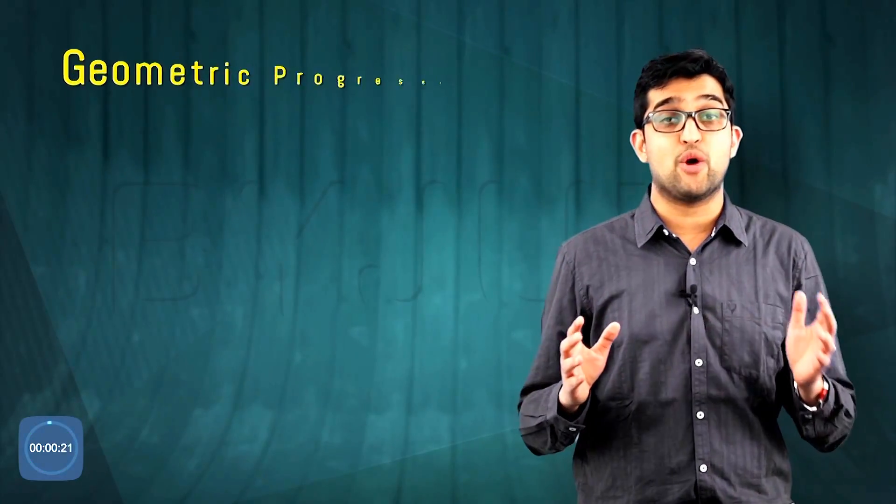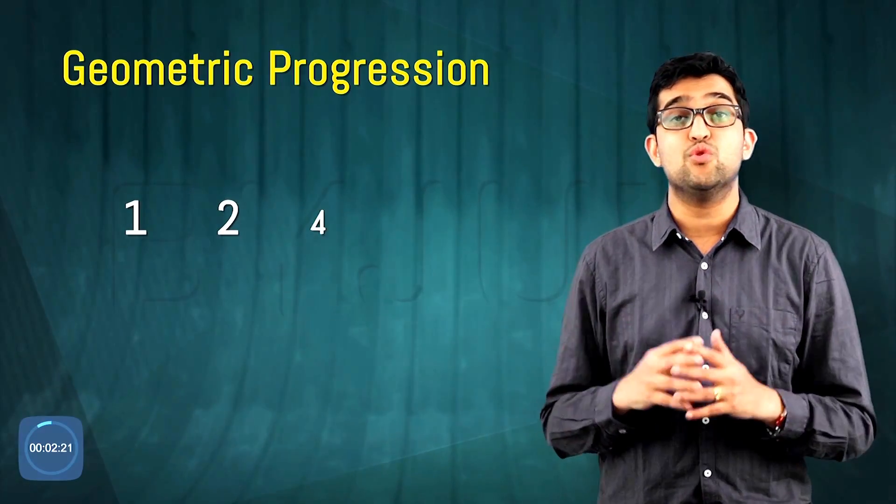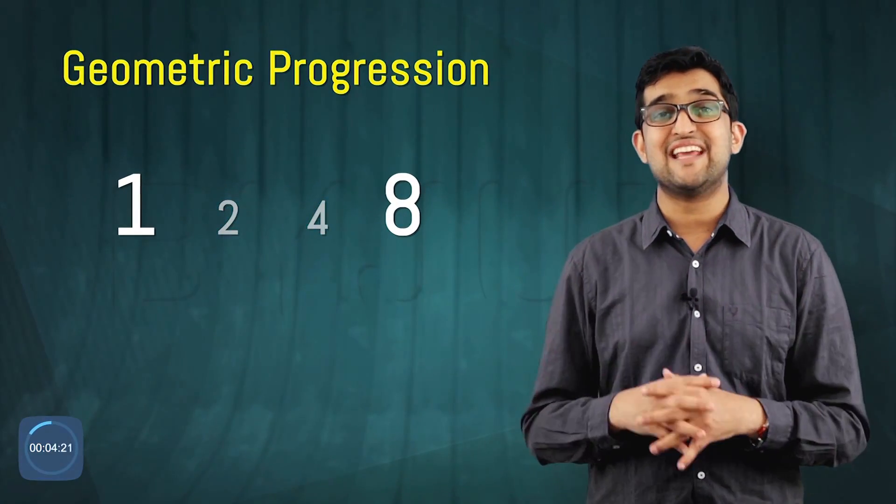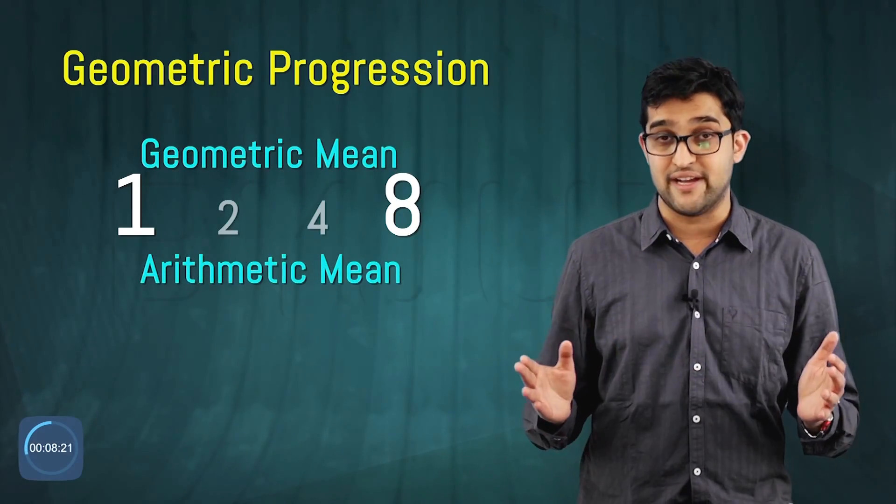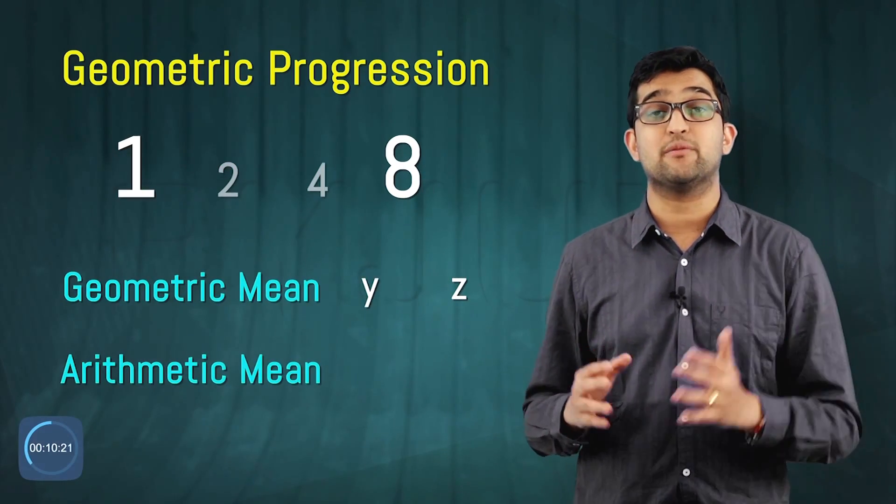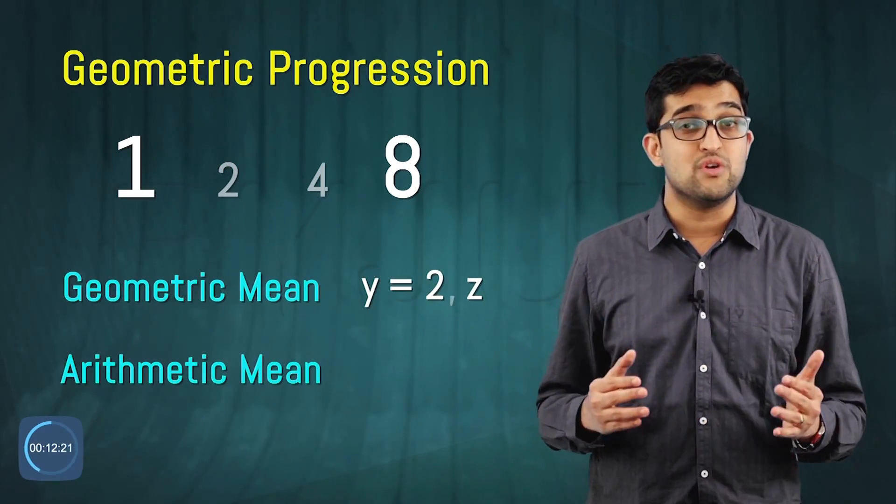Take a basic geometric progression: 1, 2, 4, 8. One and eight are the two numbers between which the GMs and AM are defined. Y and Z are the geometric means, so Y is equal to 2 and Z is equal to 4.